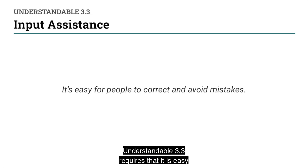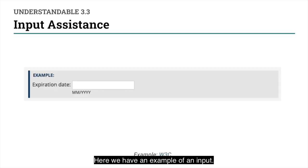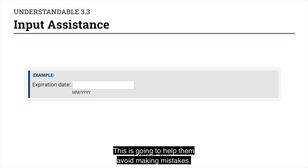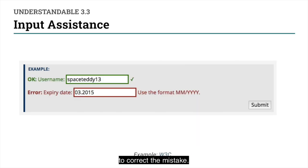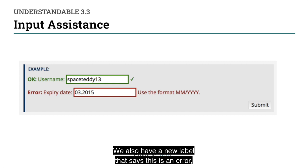Understandable 3.3 requires that it is easy for people to correct and avoid mistakes. Here we have an example of an input that is clearly labeled — the user knows it is expecting an expiration date, and there's also helper text below the input that lets the user know how the date should be formatted, which will help them avoid making mistakes. If a mistake is made, the user has the option to correct it. The field that has the error is clearly marked — we're using the color red for the text and the border to signify that there's an error. But you can't just use color alone — we also have a new label that says this is an error, and helper text that explains how to fix it.